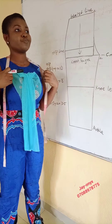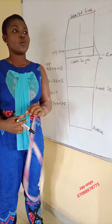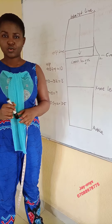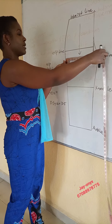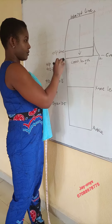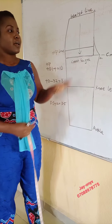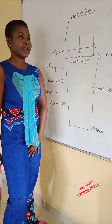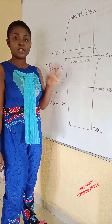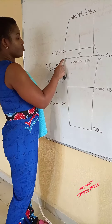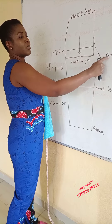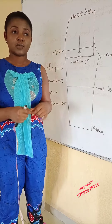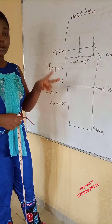Method 2 for crotch extension: measure around your thigh, divide it by two, and measure that amount from the beginning of the hip line box. Wherever it stops accommodates both the crotch line and the crotch extension. If my thigh is 26, dividing 26 by 2 gives me 13. So I measure from the beginning of my hip box measurement down to where 13 stops. This may not work for everyone, but it's a valid method worth trying.